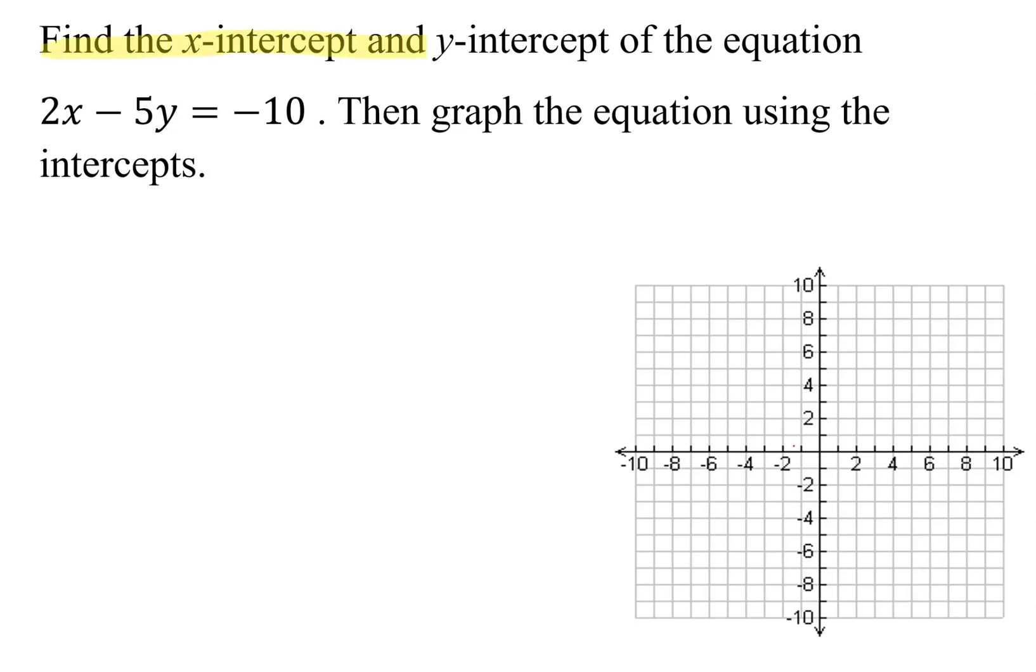In this problem, we need to find the x-intercept and the y-intercept of the equation 2x minus 5y equals negative 10. Then we need to graph the equation using the intercepts.